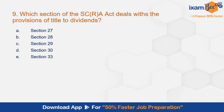Question number 9: Which section of SCRA deals with the provisions of title to dividends? The correct answer is A, section 27. Title to dividends is mentioned in section 27 of SCRA.